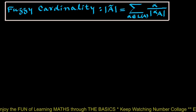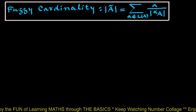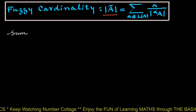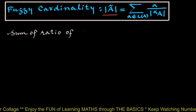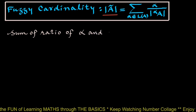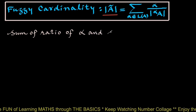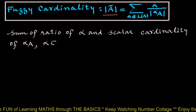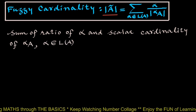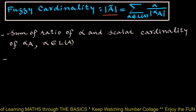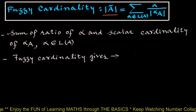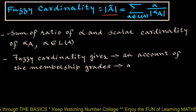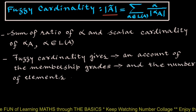Fuzzy cardinality is denoted by a peculiar sign, which is the sum of the ratio of alpha and the scalar cardinality of alpha cut A, where alpha belongs to the level set L. Fuzzy cardinality gives an account of the membership grades and the number of elements having these membership grades.